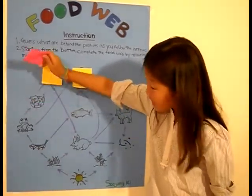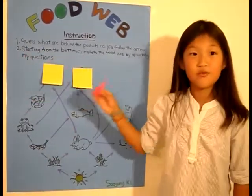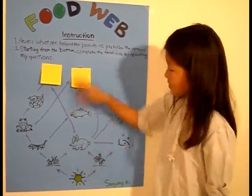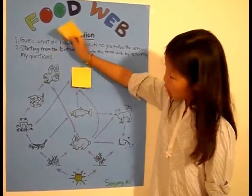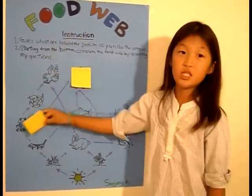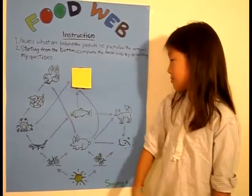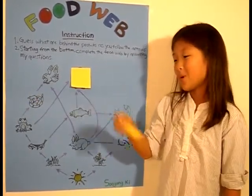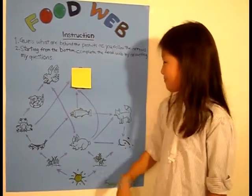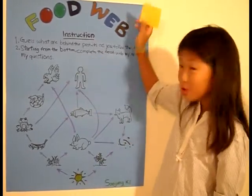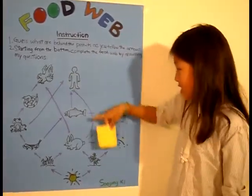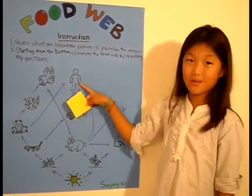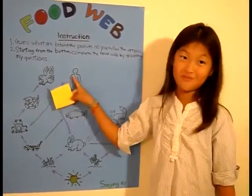Snakes eat frogs. Hawks eat snakes. Humans — us — eat rabbit and trout and frog.